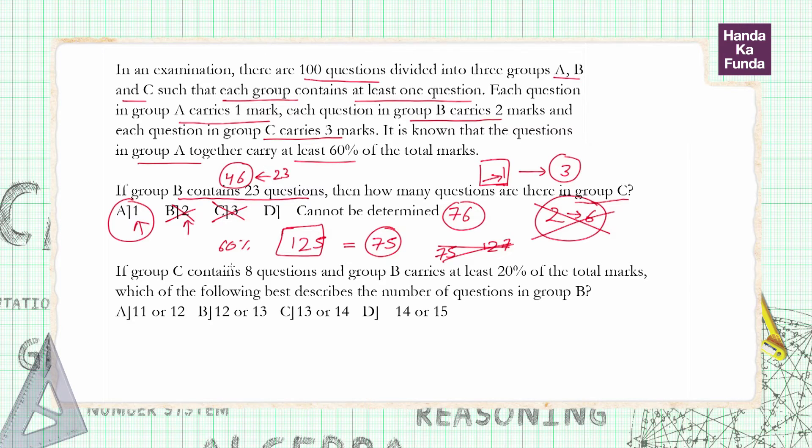Applying very similar logic, group C contains eight questions, so my score in group C is 24. Now let's say group B contains x questions, so my score in group B will be 2x. And in group A, well, eight questions are gone in group C, so number of questions as well as number of marks in group A is 92 minus x.